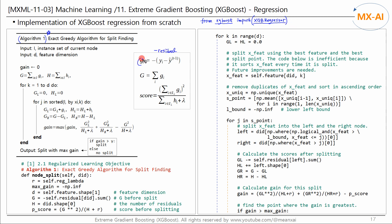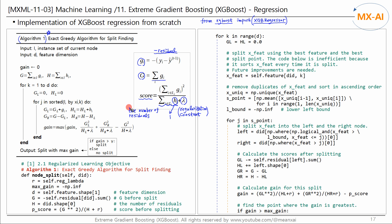G is a negative residual. The uppercase G is the sum of the negative residuals within a node. The similarity score is calculated using this formula. Here, lambda is a regularization constant. For regression with mean squared error, H is 1, and the sum of H is the number of residuals in the node. Gamma is a pruning constant. Now let's implement the above algorithm in code.